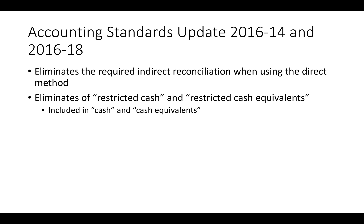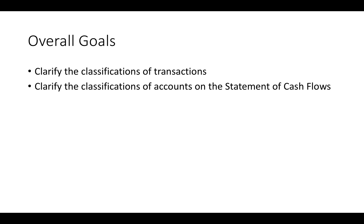Along with Statement Number 95, the Accounting Standards Update 2016-14 and 2016-18 comes along with it. This accounting standards update eliminates the required indirect reconciliation when using the direct method, so this is no longer needed to be attached at the bottom of the direct method Statement of Cash Flows form. It also eliminates the accounts restricted cash and restricted cash equivalents — these transactions now fall into just cash and cash equivalents accounts.